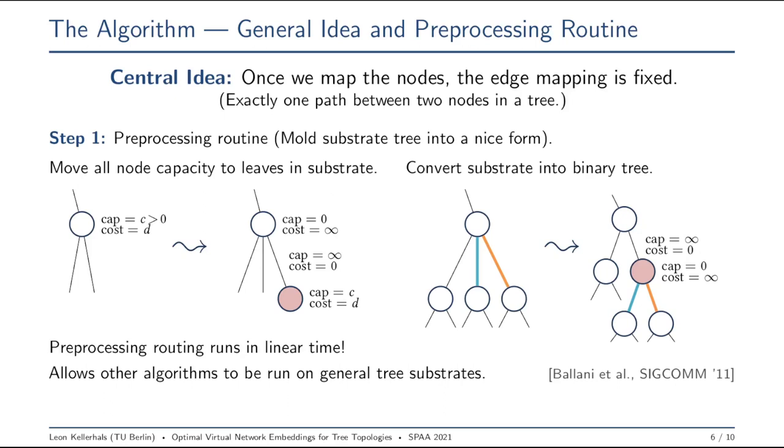Now this pre-processing is pretty simple and straightforward and indeed it also runs in linear time. It can also be applied to other algorithms. For example, the work of Bansal and others provides an algorithm that only works on binary trees where only the leaves have some non-negative capacity. With this pre-processing, we can lift their algorithm to work on general tree substrates.